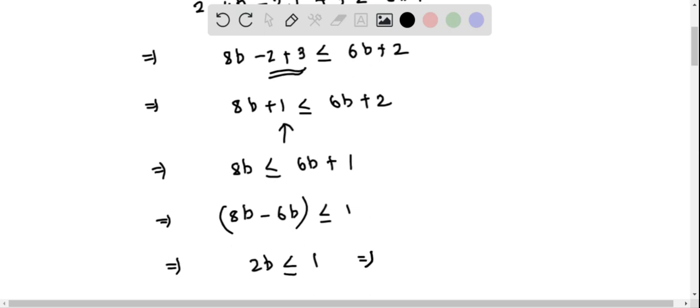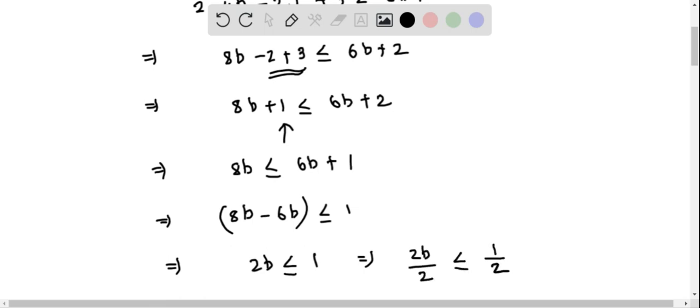Now we can divide both sides by 2 so that we can get the value of b. You do that, you get 2b divided by 2 less than or equal to 1 by 2. So this implies we get b on the left side less than or equal to half. Basically, this is the solution of the given inequality.